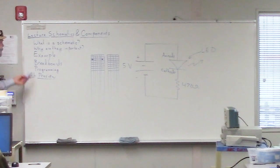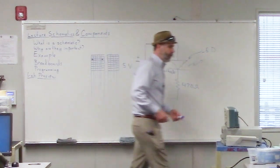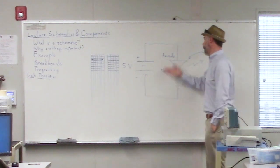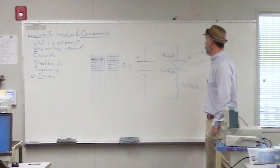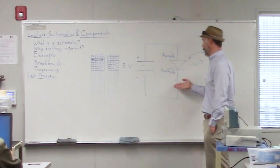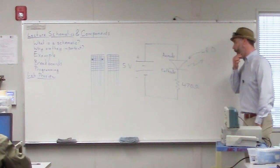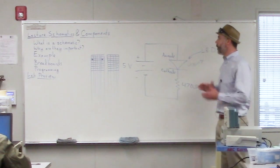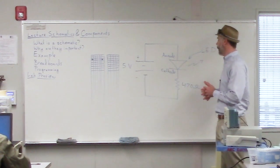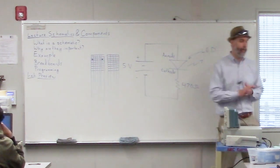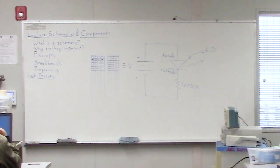The next thing I want to talk about is programming. The circuit we discussed would light up this LED, but the LED would not flash — it would just stay on constantly until the battery runs out. So if we want to make the LED actually flash, we need to control the power somehow, turning it on and off. To do that we need to do a little bit of programming.